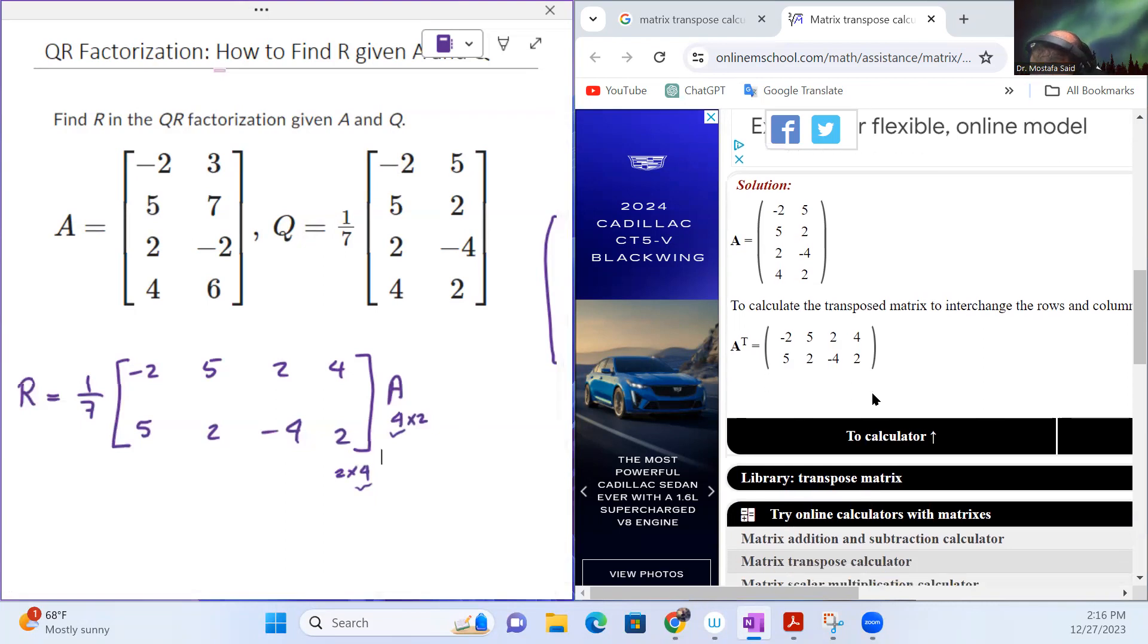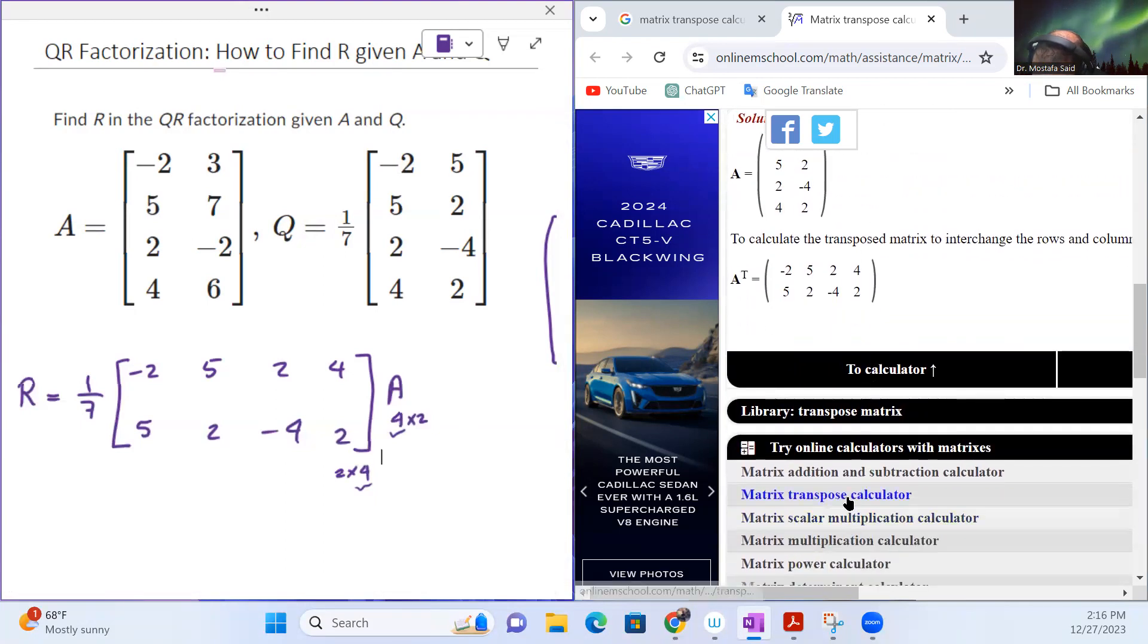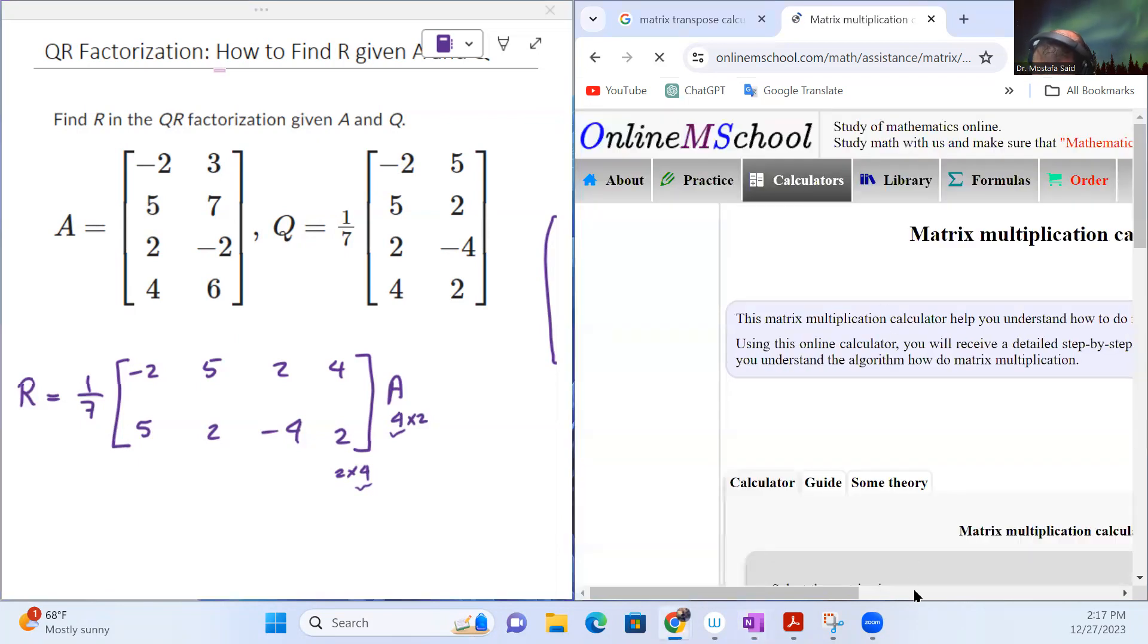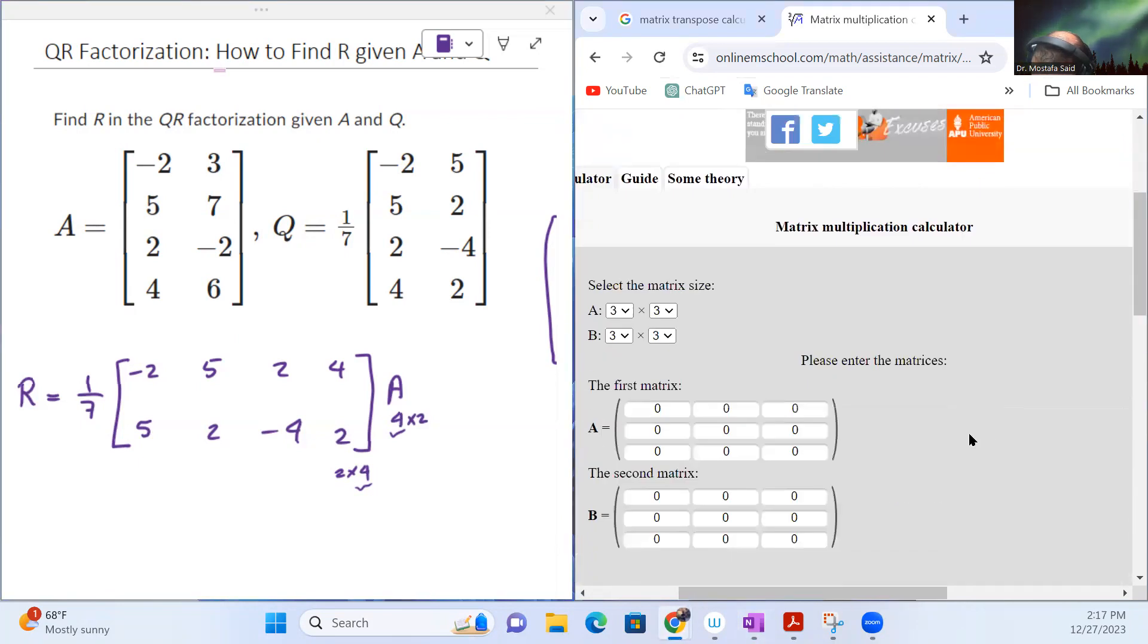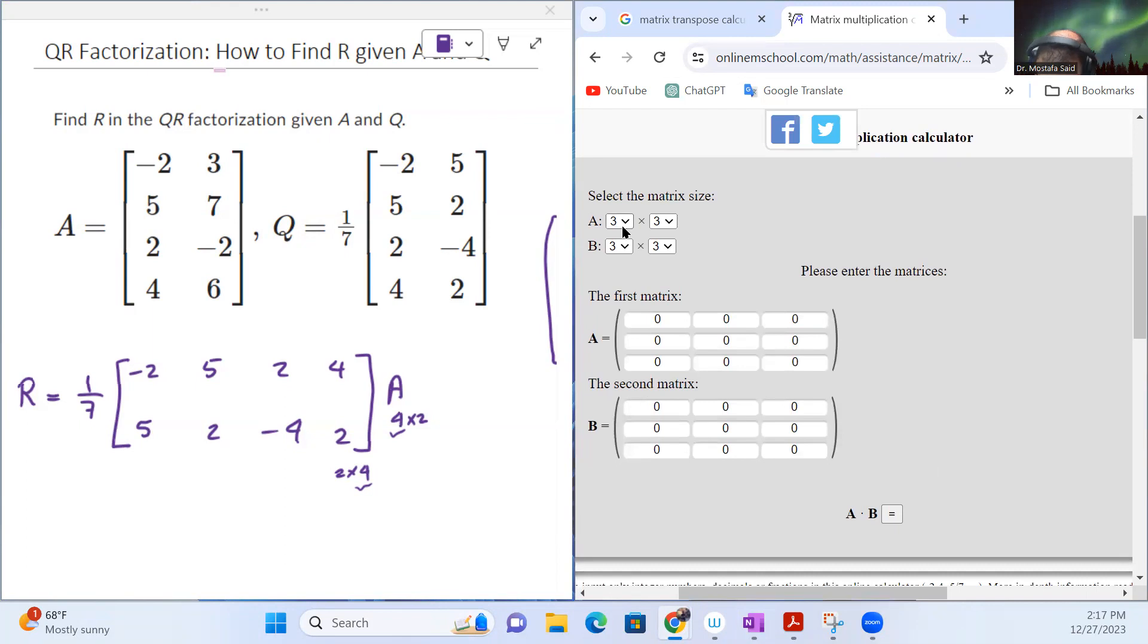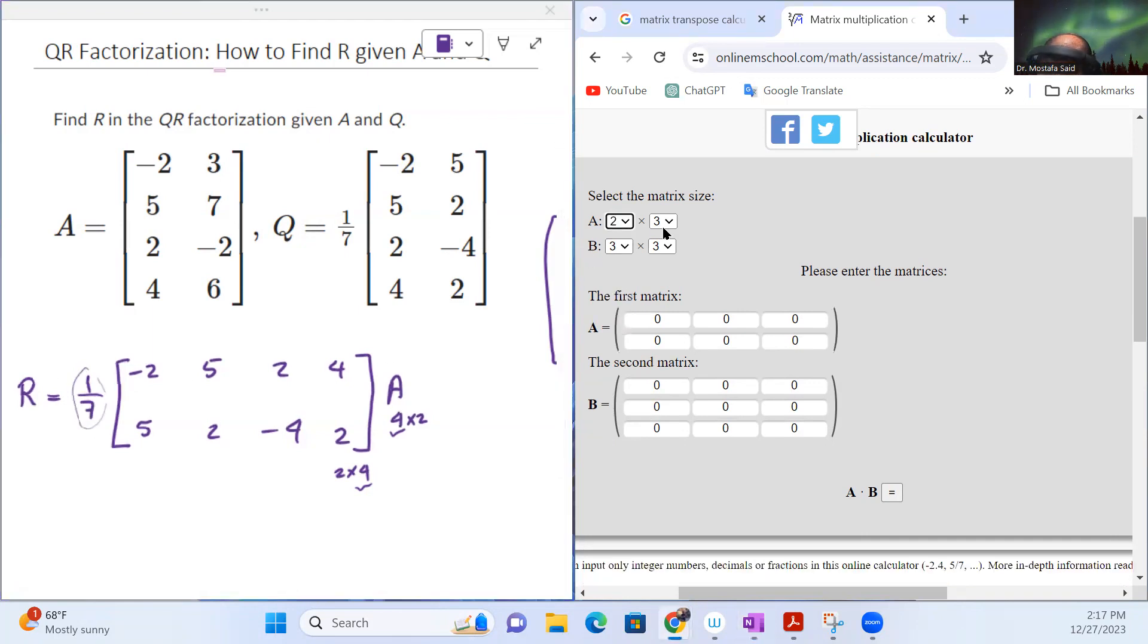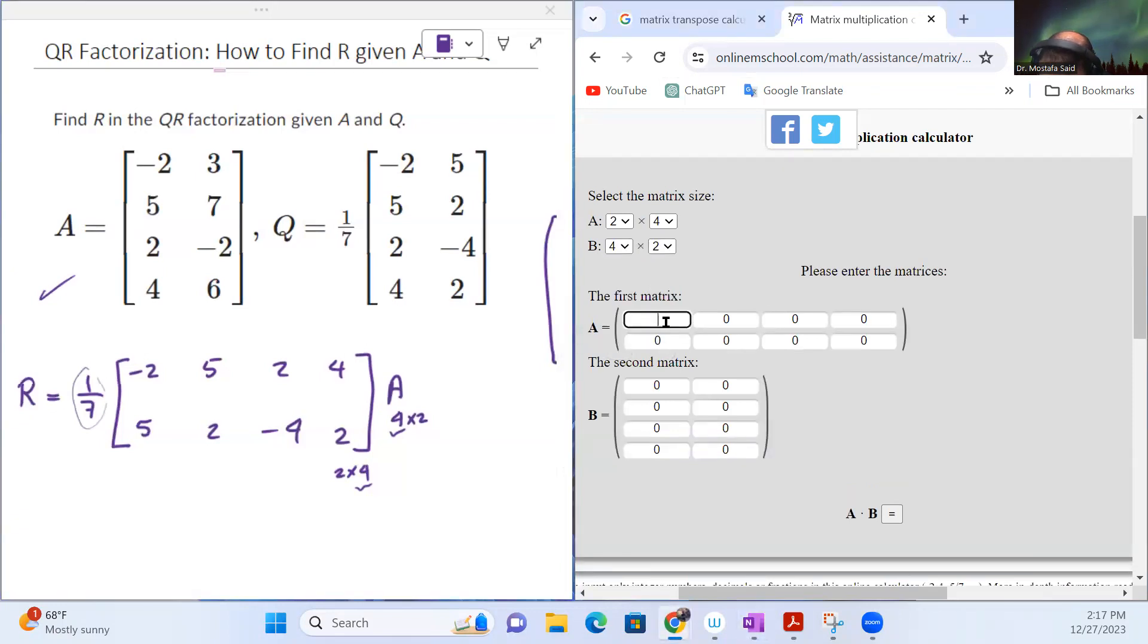Good. So let's now do the multiplication. I believe here is the same website, it can do multiplication. Yes, matrix multiplication calculator. Let's do the multiplication here. So the first matrix is 2 by 4. Again I'm going to leave the 1 seventh to the end, that's fine. Second matrix is A, which is this one here, it's 4 by 2.